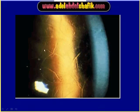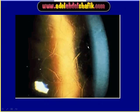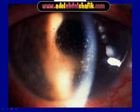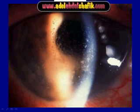The same principle applies here: these lines against light coming from the iris represent direct retro illumination, and these dots and short parts of lines against blackness represent indirect retro illumination. Again you can see some lesions against the iris and some lesions against the pupil.